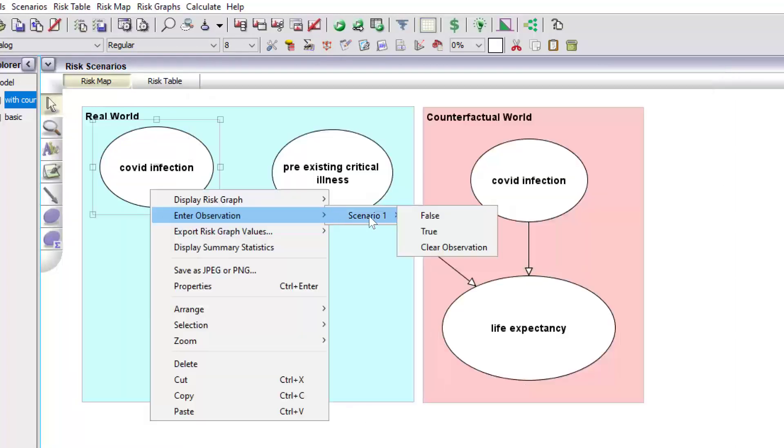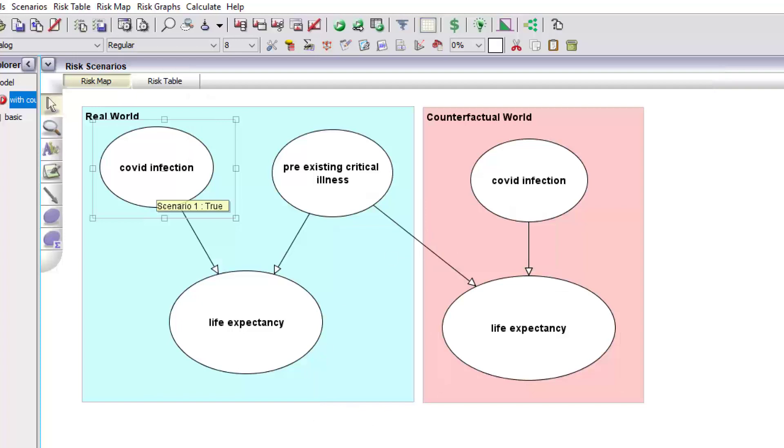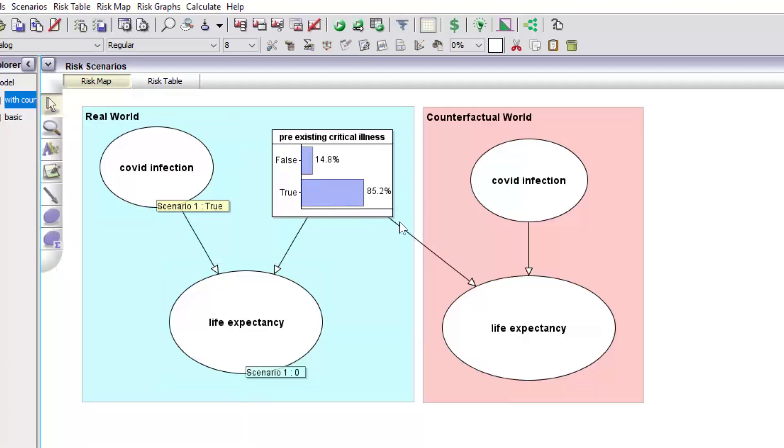So let's just again put back in the observations from the real world. Now we've got the learnt probability of pre-existing critical illness that we can use in the counterfactual world.